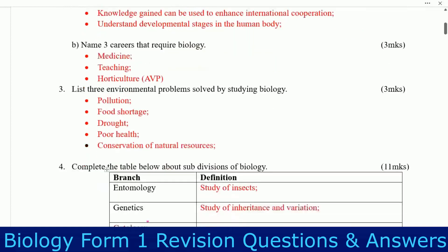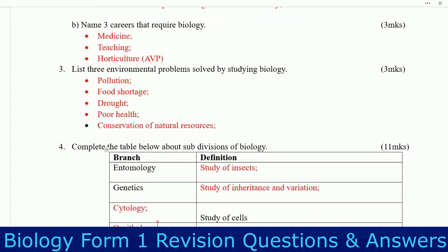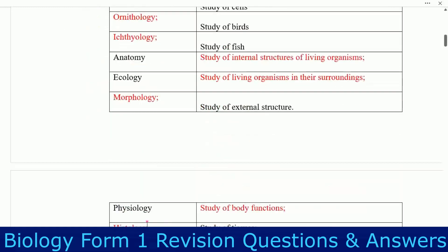Next: understand developmental stages in the human body. Part B: name three careers that require biology. Three careers that require biology are: medicine, teaching, and agriculture. Part C: list three environmental problems solved by studying biology — pollution, food storage, drought, poor health, and conservation of natural resources.